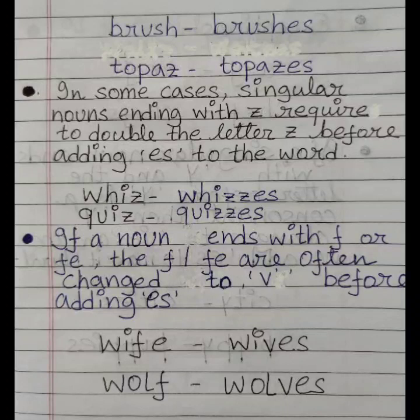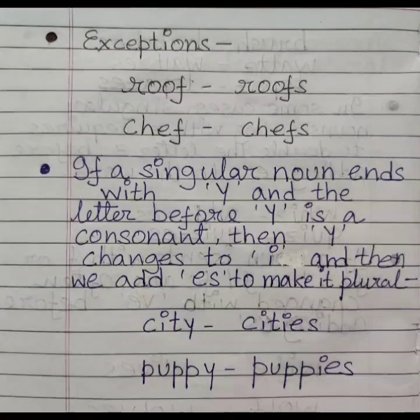If a noun ends with F or FE, the F or FE are often changed to V before adding ES. Example: wife → wives, wolf → wolves. But students, there are a few exceptions: roof → roofs, chef → chefs. So there are a few exceptions to this rule.